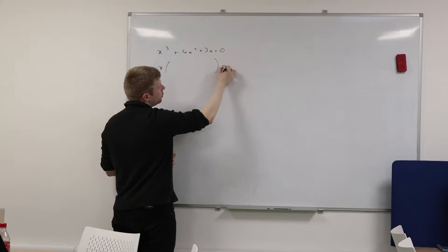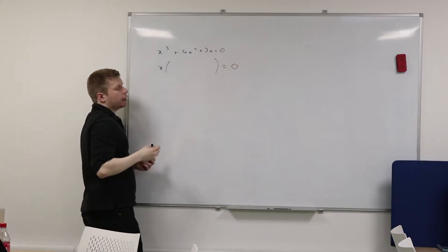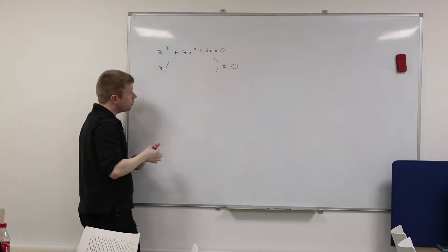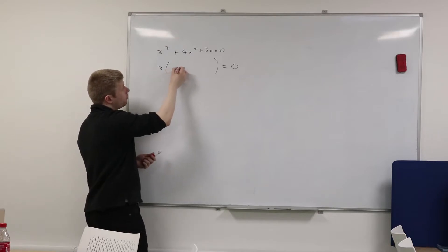So if I factorise an x out, what do I get inside the brackets? x squared plus 4x plus 3. Perfect.